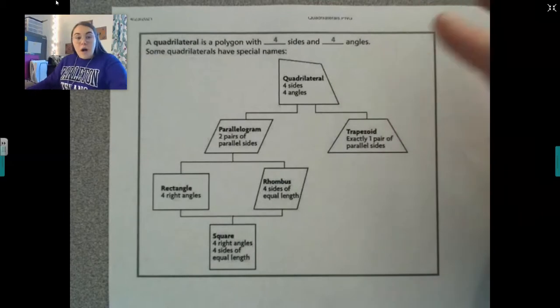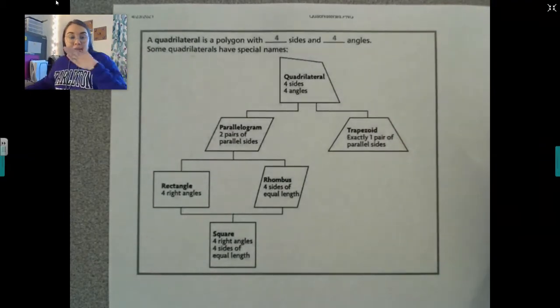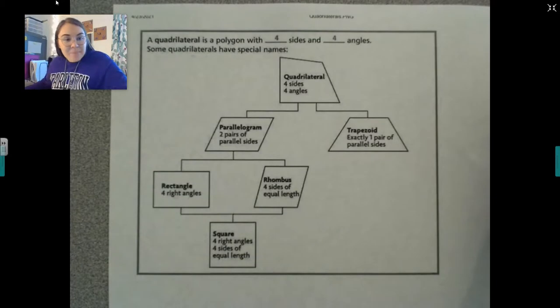So a quadrilateral is a polygon, and a polygon is just about any shape that has four sides and four angles. So if you see a shape and it has four sides and four angles, it's a polygon. It's a quadrilateral.